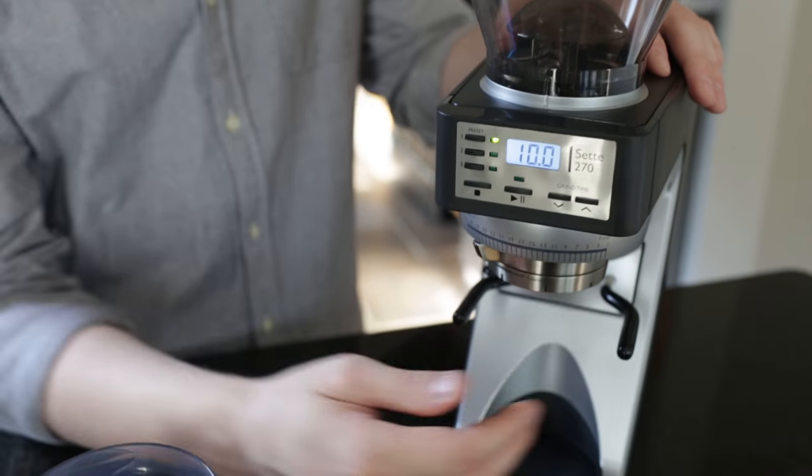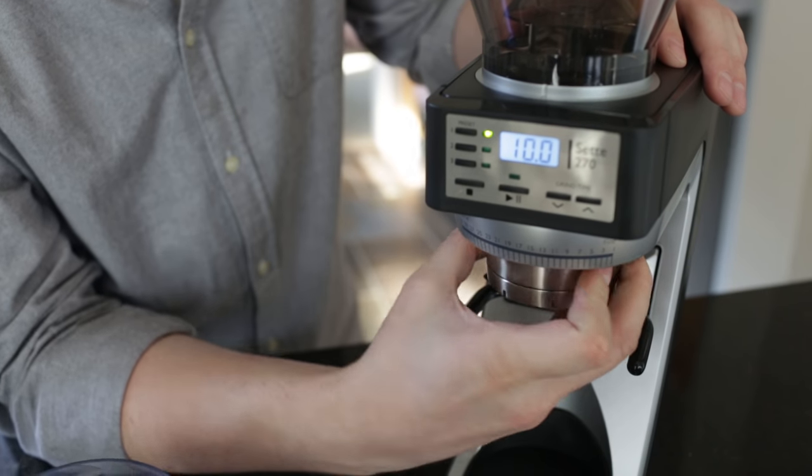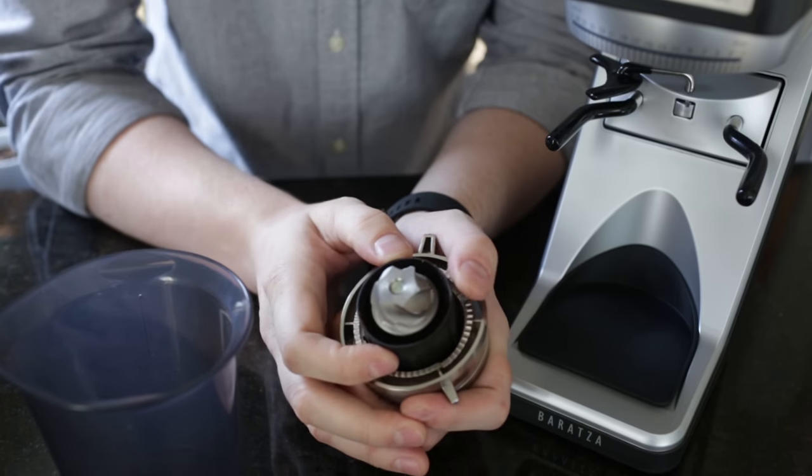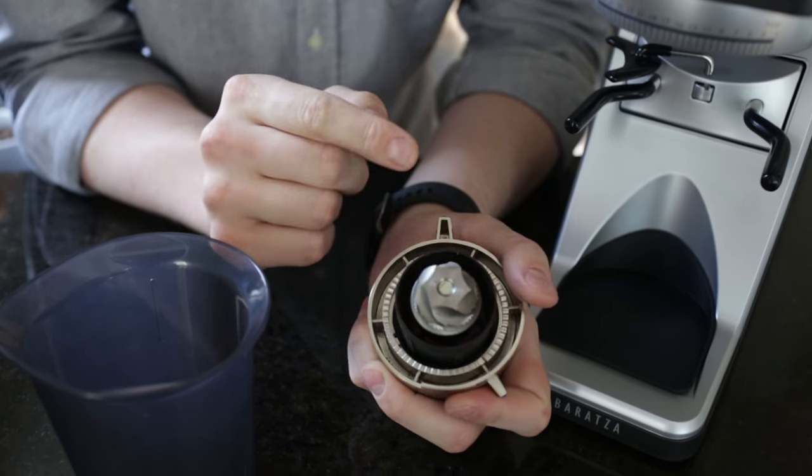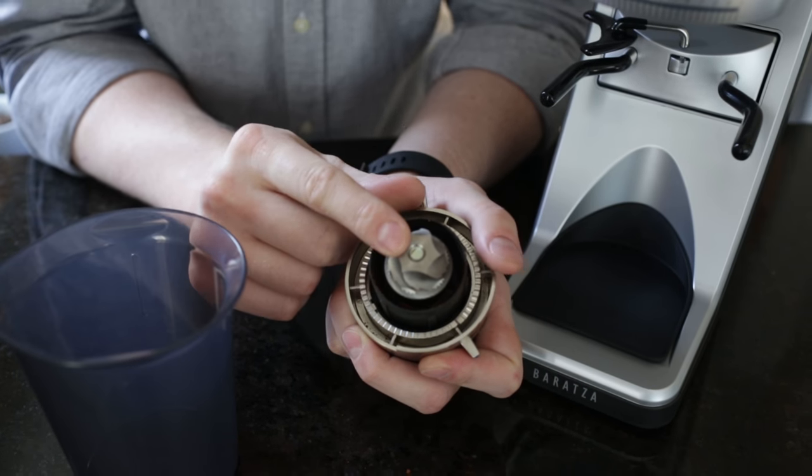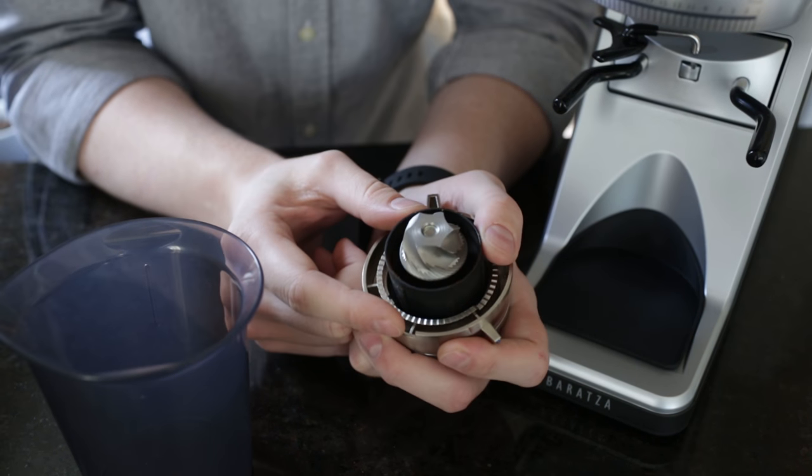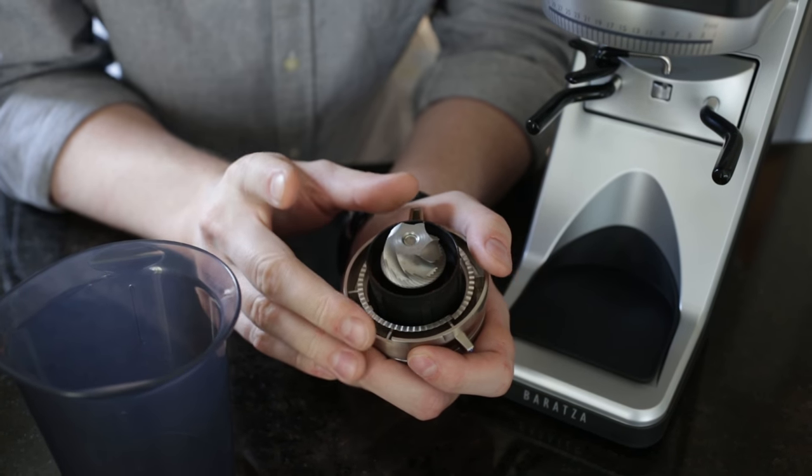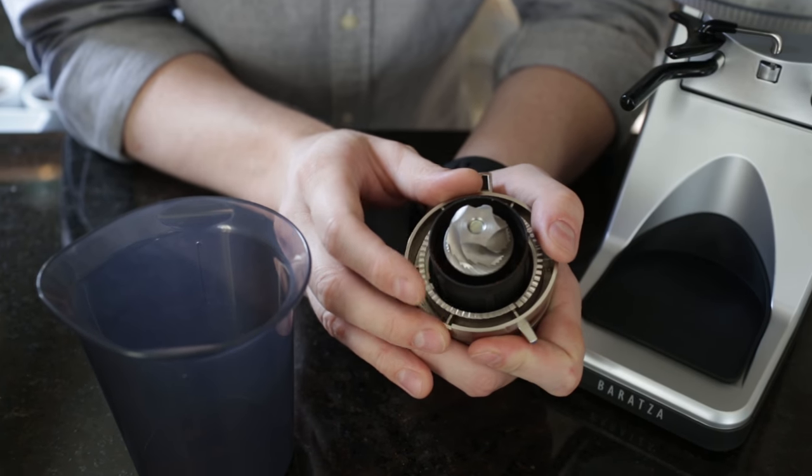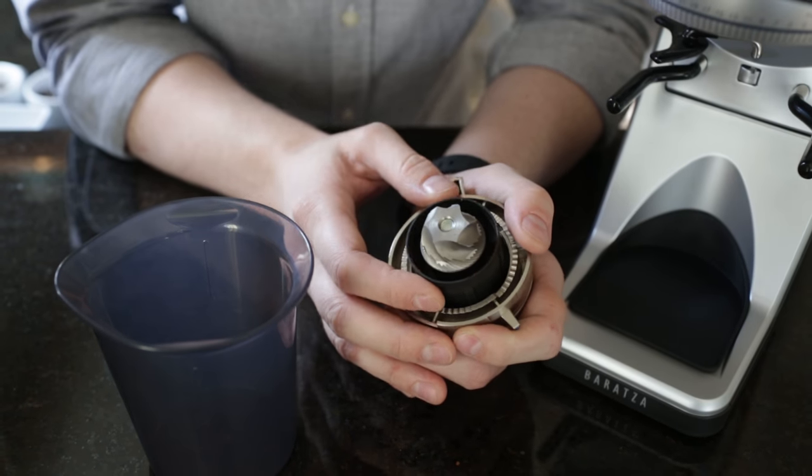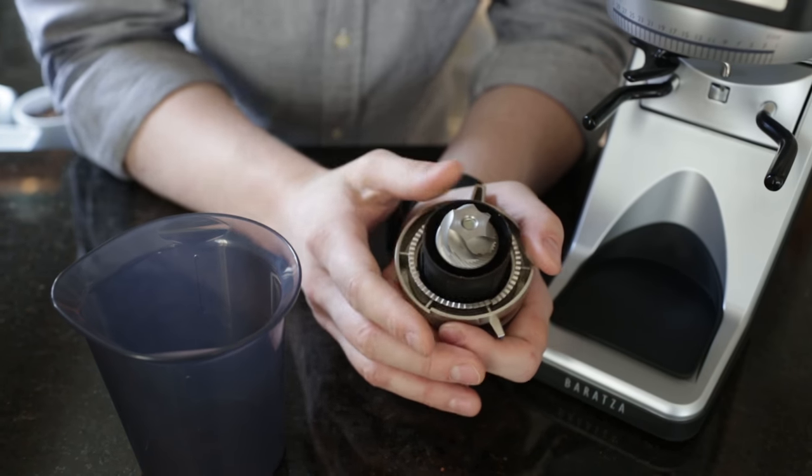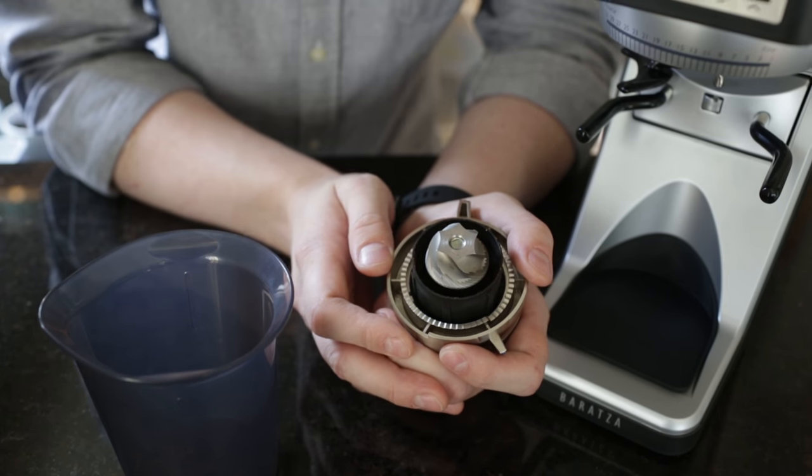Down below, we have some brand new burrs. These are 40mm stainless steel conical burrs. You might have noticed that I just took out the center cone burr rather than the ring burr that you might be familiar with on the previous Baratzas. There is an entirely new grinder drive mechanism in the Sette. It's called the Etzinger drive, and what it does is it actually spins the outer ring burr instead of the cone burr. The cone burr is fixed in place.